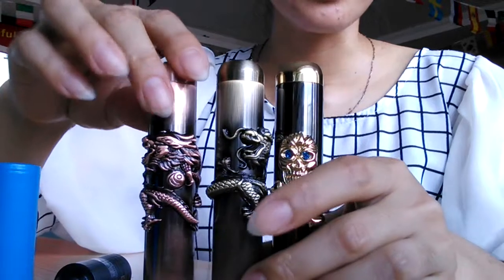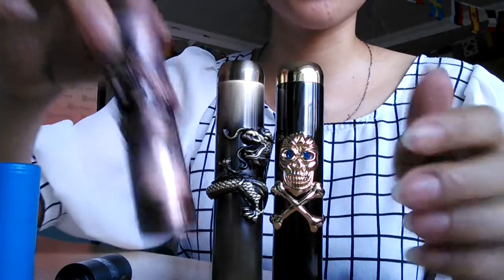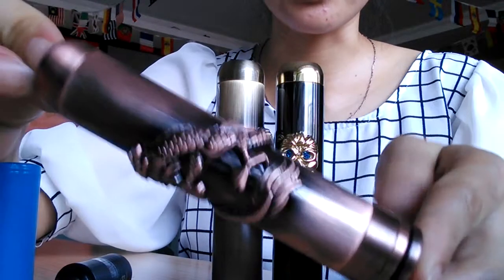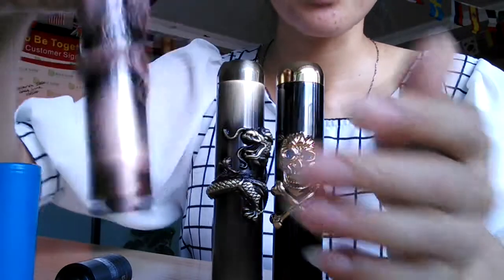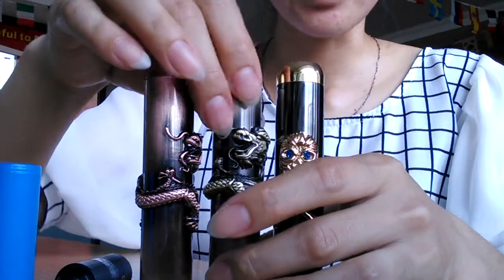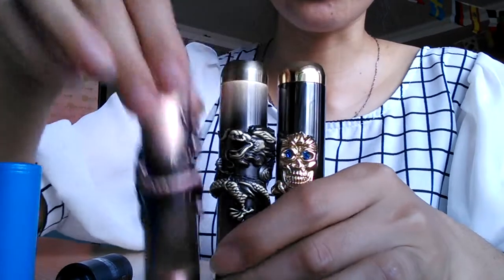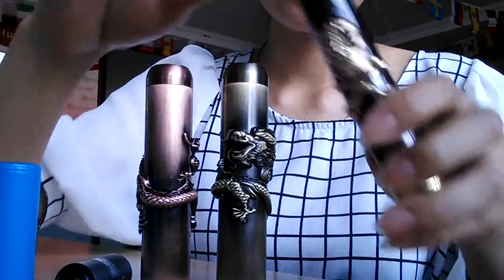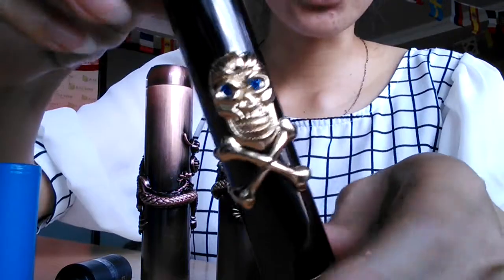Guys, let me show you our company's new mechanical mod. This is the Auspicious Dragon, and its colors are brown and red brown. This one is the Skull Axe, very cool.